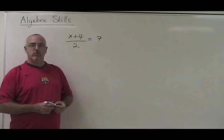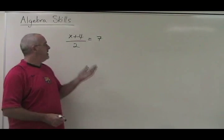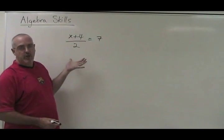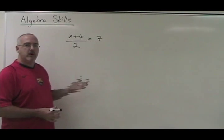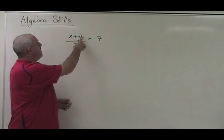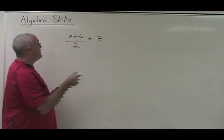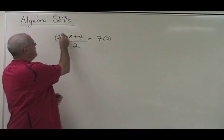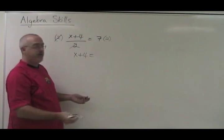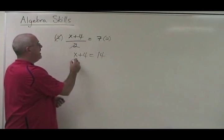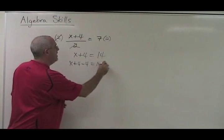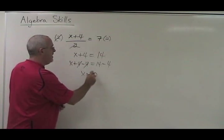Now that we know the four basic rules of algebra, we have to address a few special cases. This is one of them: your variable is part of an algebraic expression which is the numerator of a big fraction — I call it a giant fraction. What you do is look at the denominator and say, my expression is being divided by a 2. If I multiply both sides by 2, I can cancel that denominator. All that's left on the left side is x plus 4, and this equals 14. Then x plus 4 minus 4 equals 14 minus 4, these cancel, and x equals 10. You have your answer.